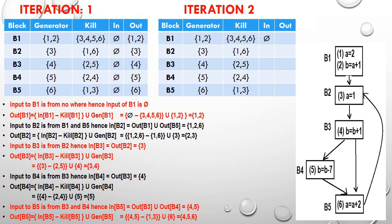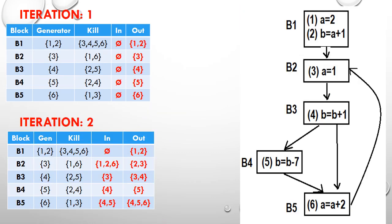For b5, there are edges from b3 to b5 and from b4 to b5, so in(b5) = out(b3) ∪ out(b4). The output of b3 is {3,4} and output of b4 is {5}, giving in(b5) = {4,5}. Then out(b5) = in(b5) - kill(b5) ∪ gen(b5) = {4,5} - {1,3} ∪ {6} = {4,5} ∪ {6} = {4,5,6}. So we have found new values of in and out with the help of the formula and diagram.